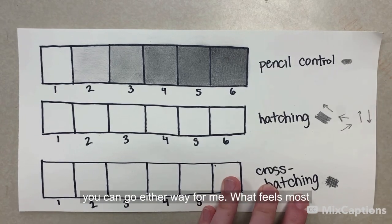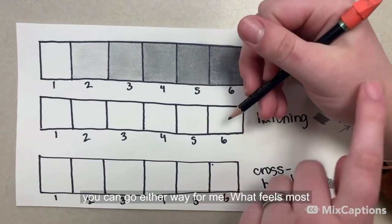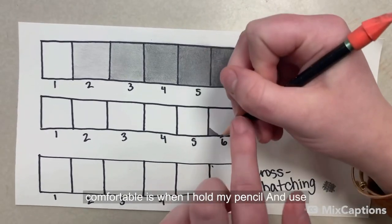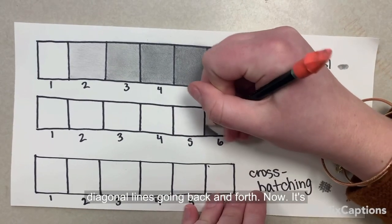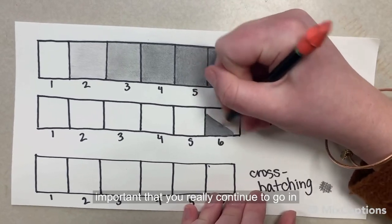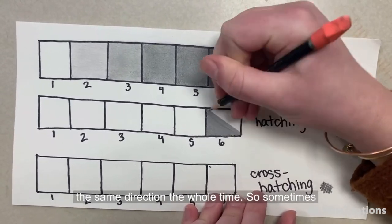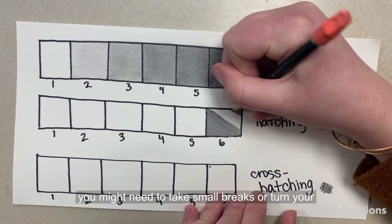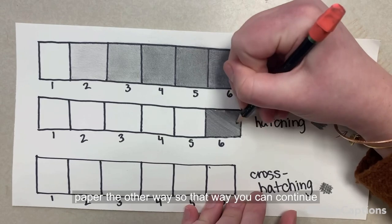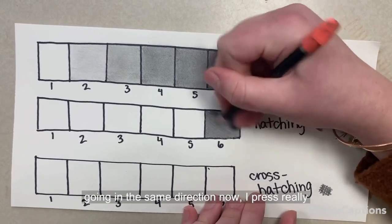So for hatching, you can go either way. For me, what feels most comfortable is when I hold my pencil and use diagonal lines going back and forth. Now it's important that you really continue to go in the same direction the whole time. So sometimes you might need to take small breaks or turn your paper the other way so that way you can continue going in the same direction.